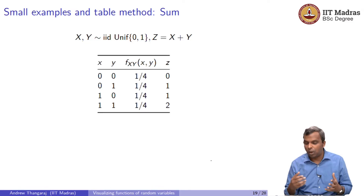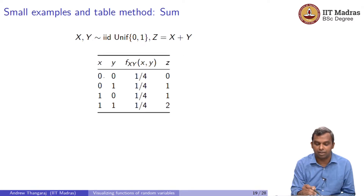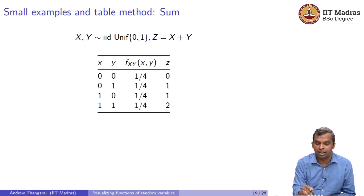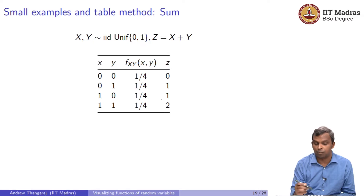Instead of just one value X, you now have X and Y, and then there is Z which is the sum of X and Y. The pair (0,0) has probability 1/4, since X and Y are iid uniform {0,1}. So the four rows are (0,0), (0,1), (1,0), (1,1), each with probability 1/4. This table you can make very easily for small-sized examples.